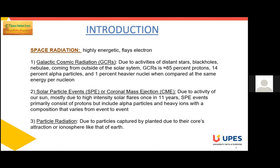So what is space radiation? Space radiation is different from the kind of radiation we experience here on Earth. It is comprised of atoms in which electrons have been stripped away as the atom accelerated in space to speeds approaching the speed of light, and eventually only the nucleus remains. It is made up of three kinds: particles trapped in Earth's magnetic field, particles shot into space during solar flares, or galactic cosmic rays.